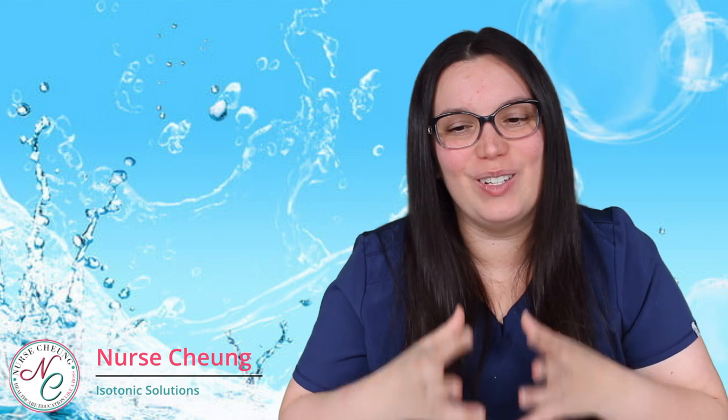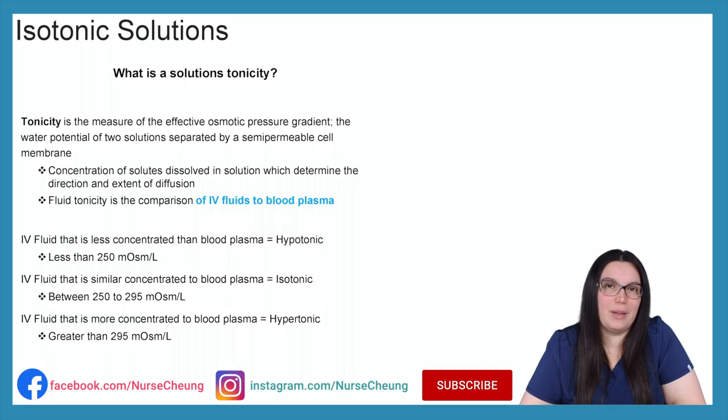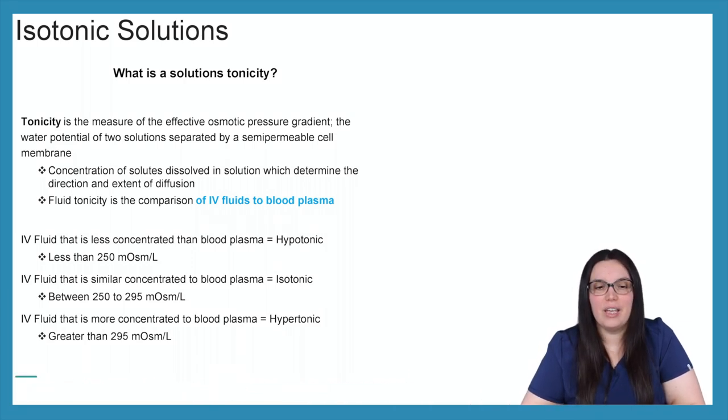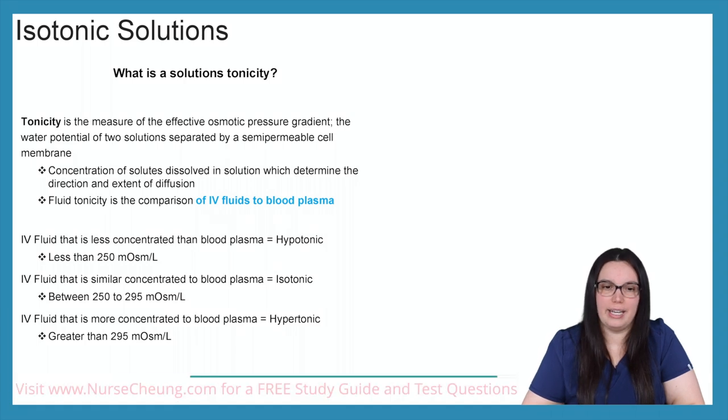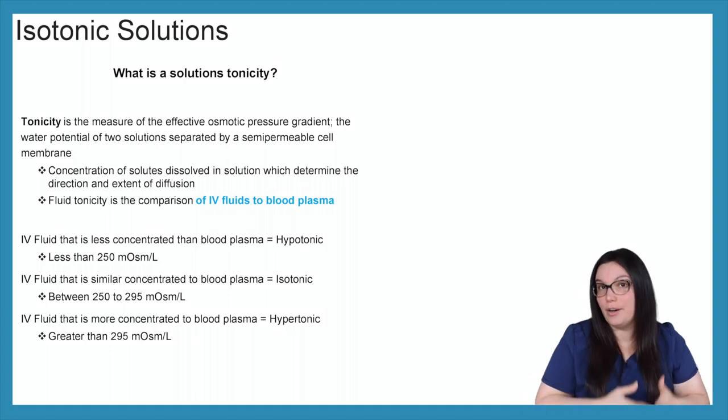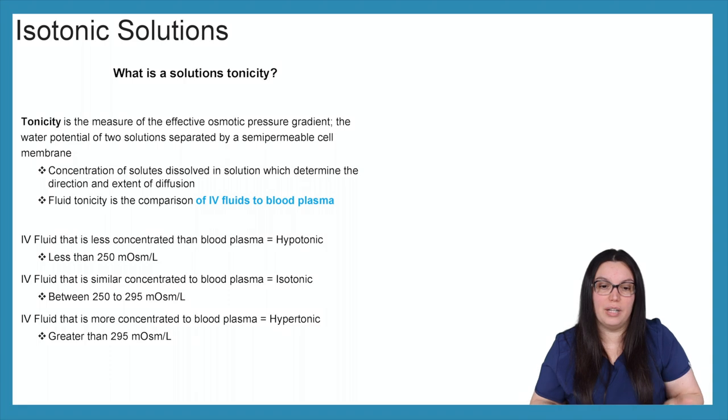But today we're going to be breaking down isotonic solutions when it comes to fluid movement. So in order to understand fluid movement, we really have to understand a solution's tonicity. Tonicity is measured as the effective osmotic pressure gradient, the water potential of two solutions separated by a semi-permeable cell membrane. Concentrations of solutes dissolved in a solution determine the direction and extent of diffusion. So fluid tonicity is the comparison of IV fluids to our blood plasma.